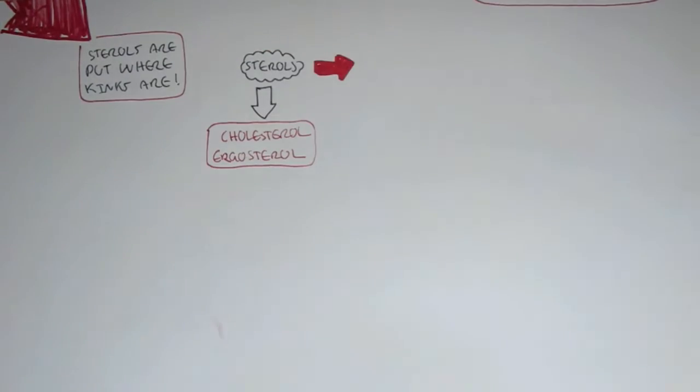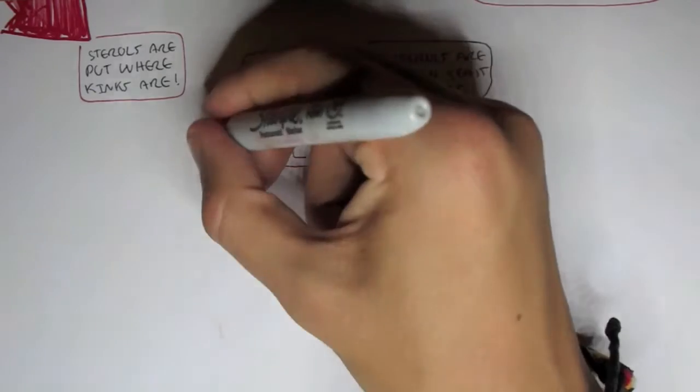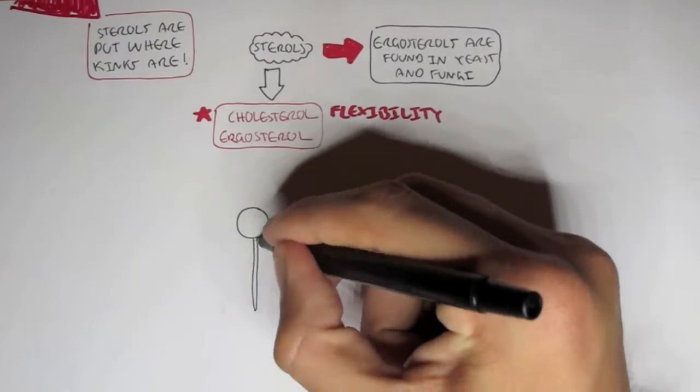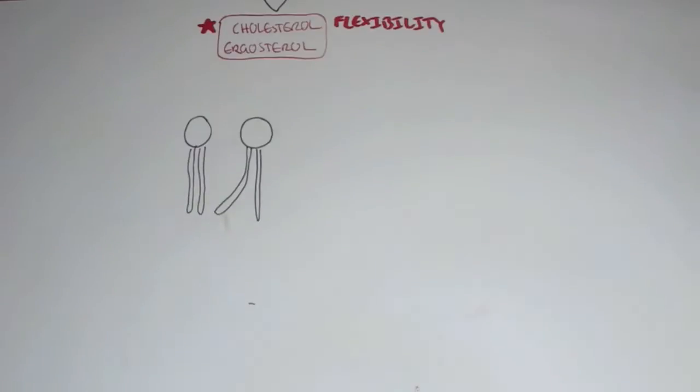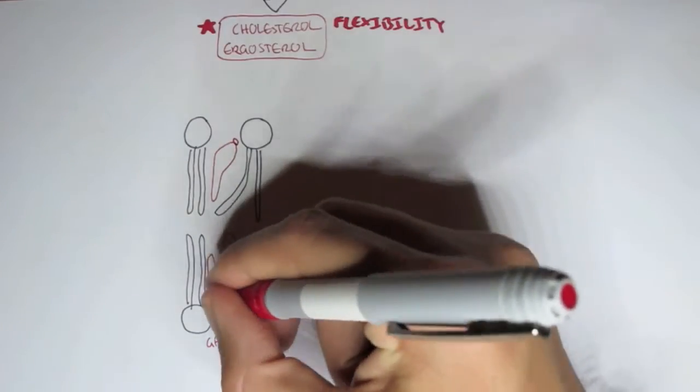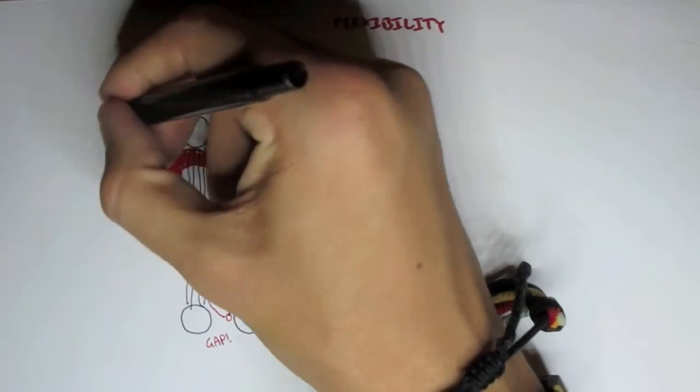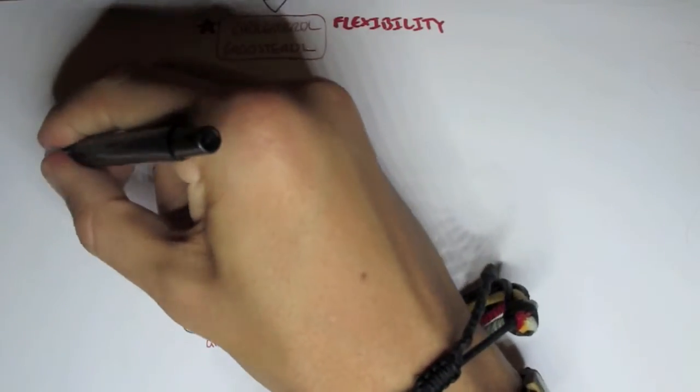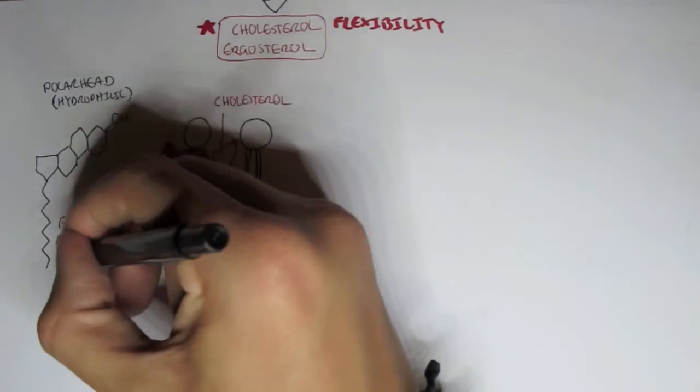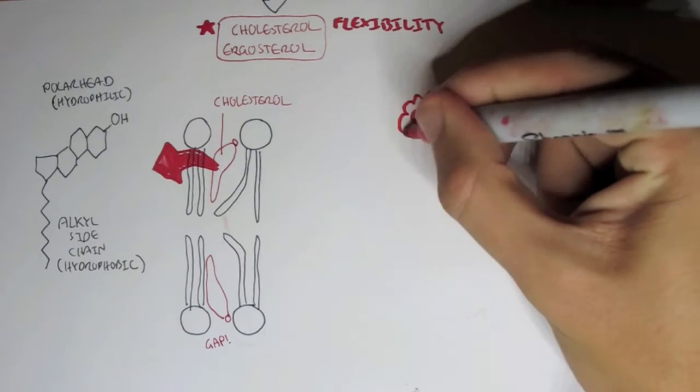Now ergosterol are found in yeast and fungi. We are mainly concentrating on cholesterol. Cholesterol increases membrane flexibility. We have unsaturated fat and saturated fat, the unsaturated forming kinks, so there's a gap. Now these molecules are cholesterol, and they fill in the gaps. Cholesterol composes of a hydroxyl group on one end and a fatty acid tail on the other. The hydroxyl group is a polar head, it's hydrophilic, whereas the hydrocarbon, the fatty acid tail, is an alcohol side chain and it's hydrophobic. That's why it fits in the gap easily.